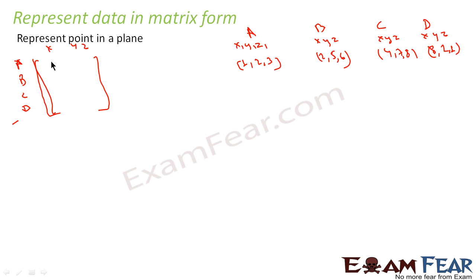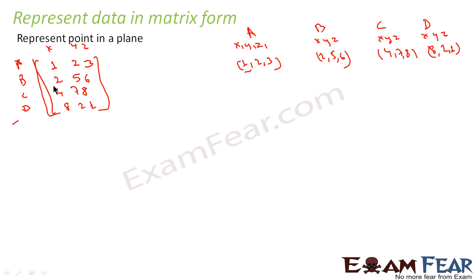X is 1 for point A, Y is 2, and Z is 3. For B it is 2, 5, 6. For C it is 4, 7, 8. And for D it is 8, 2, 1. So this is one representation where the horizontal sets are the points and the verticals are X, Y, Z coordinates — giving us 4 horizontal and 3 vertical sets.